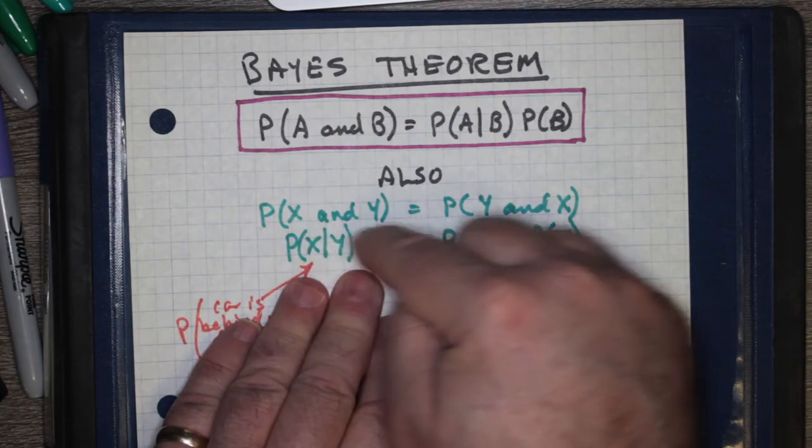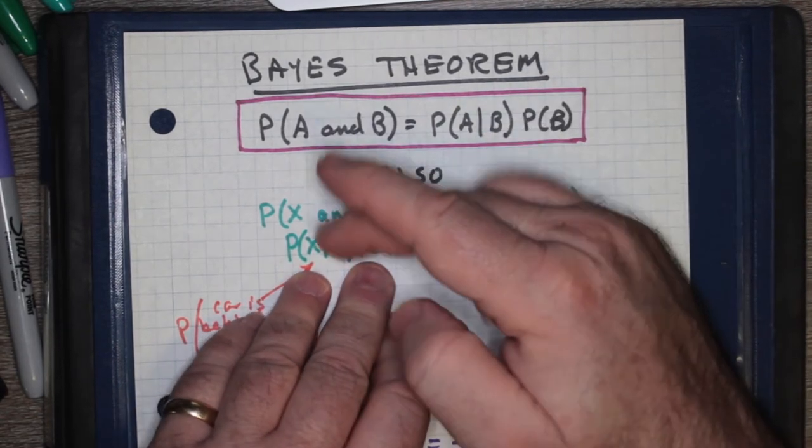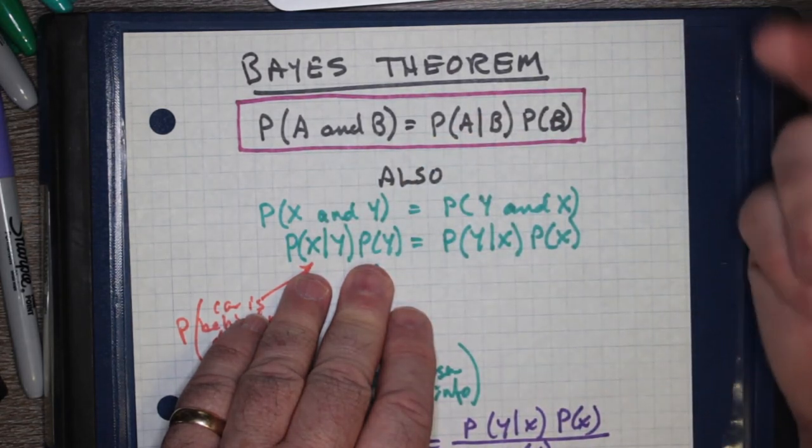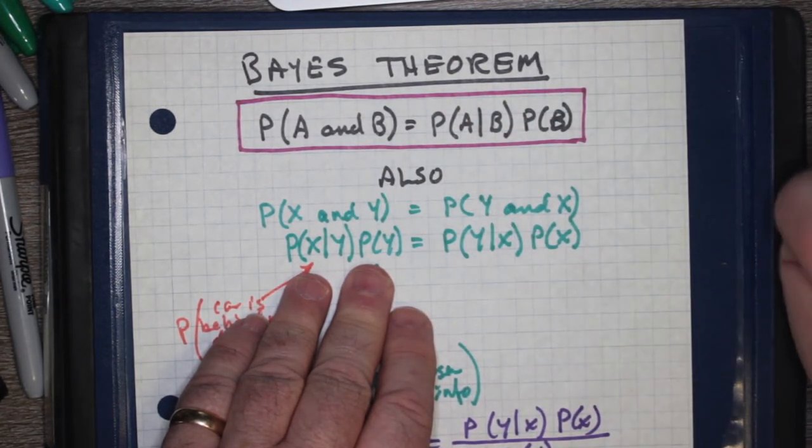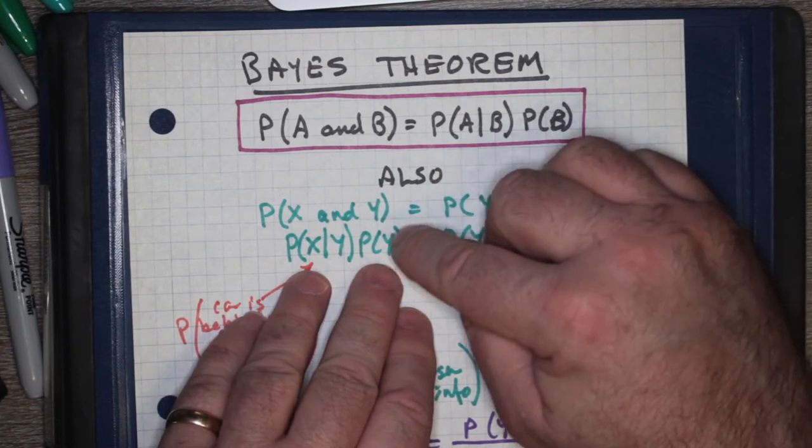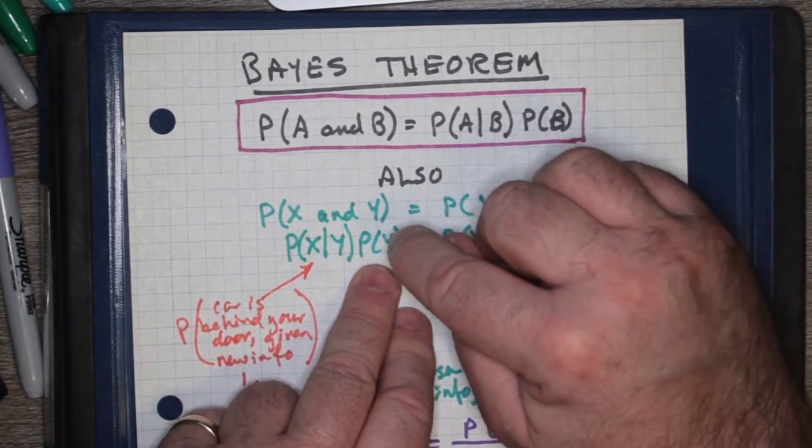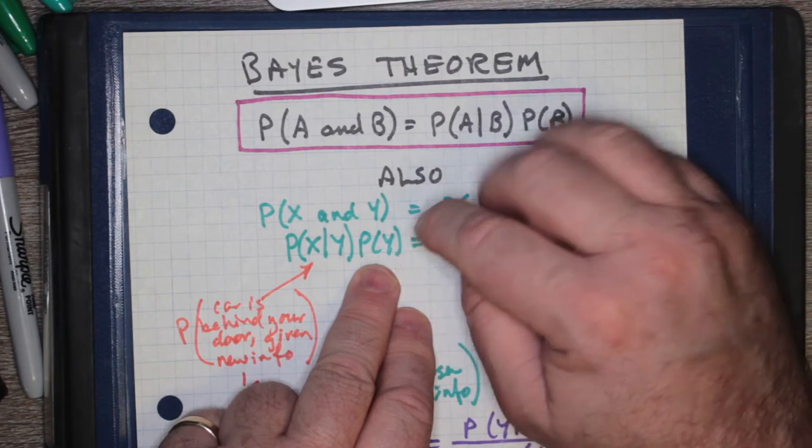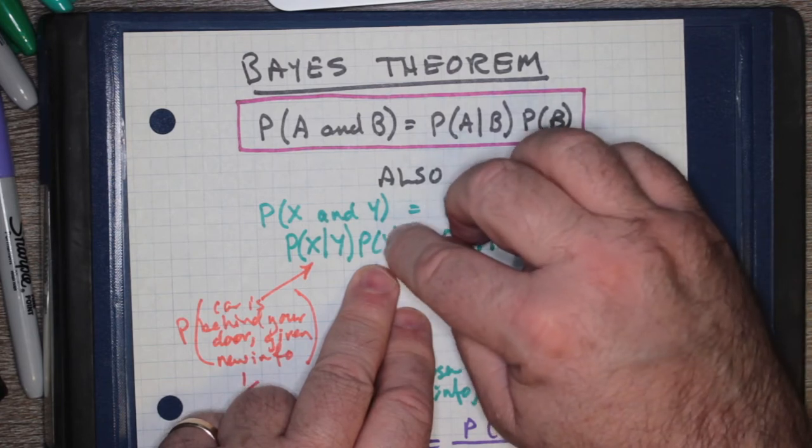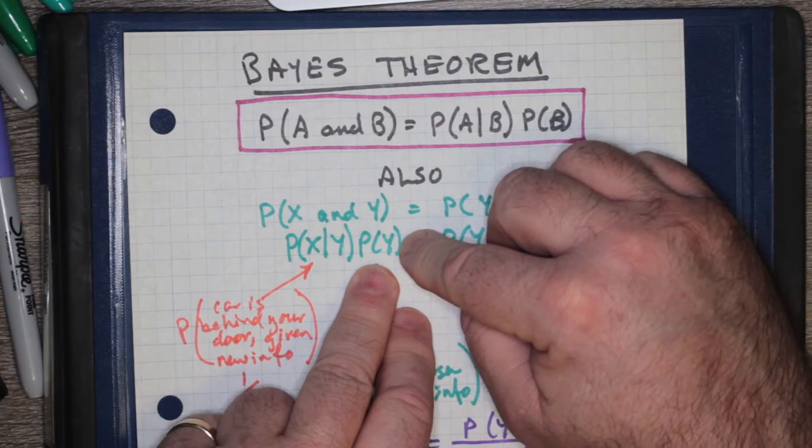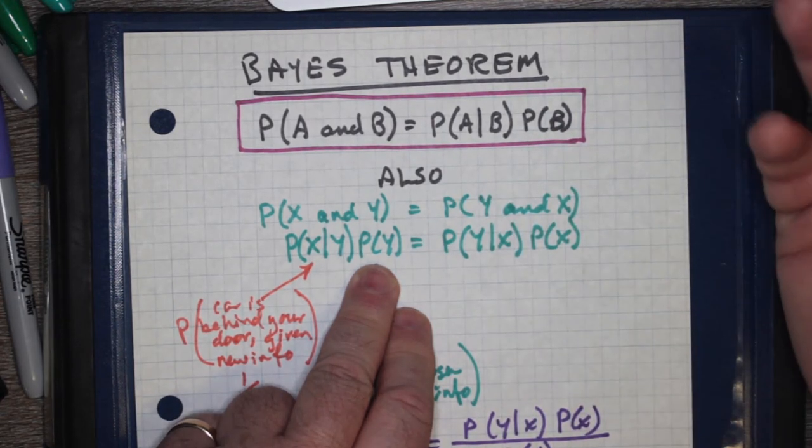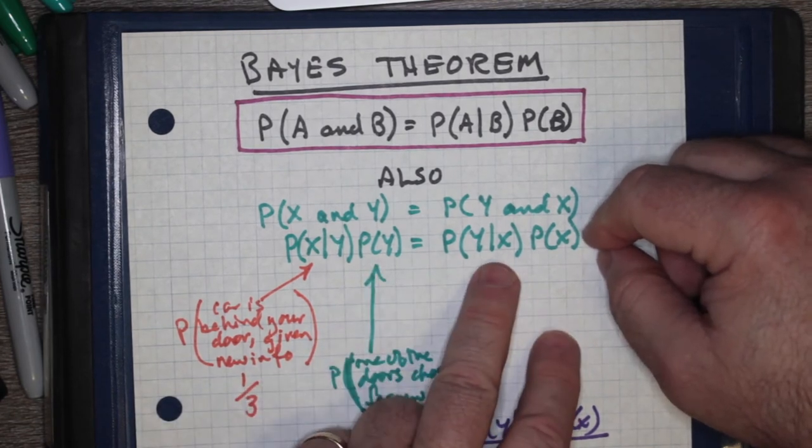P(X given Y) times P(Y): the probability that the first door you chose had the prize, given that Monty Hall showed you that one of the zonks, given the probability of the zonks being behind one of the doors, or let's just say given the times the probability that Monty Hall chose one of the doors for zonks. This is from the audience member's point of view.